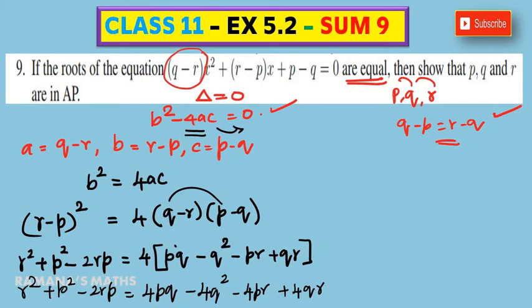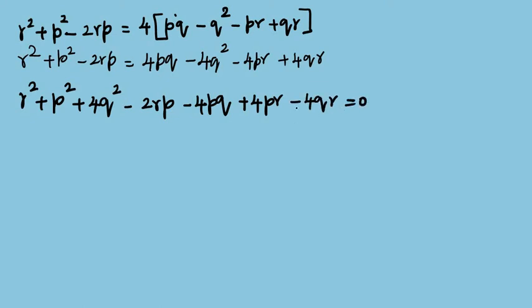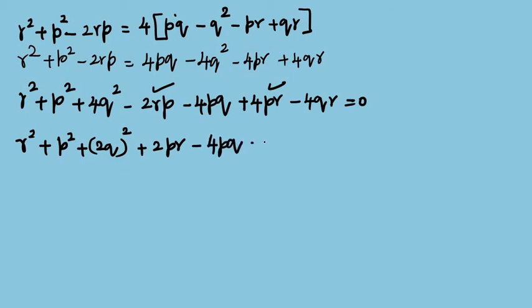Now, r² + p² + 4q² - 2rp - 4pq + 4pr - 4qr = 0. Then r² + p² + (2q)² + 2pr - 4pq - 4qr = 0.